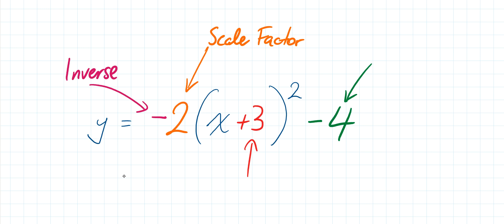Third, in the red we have our horizontal transformation. What's going to happen here is this is going to move the parabola left or right from where it would ordinarily be. Because it is a positive, it is going to move it to the negative, whereas if it was a negative — say a minus 3 — we'd move it into the positive. So it's the opposite of what you'd expect. That is our horizontal transformation — it shifts the parabola left or right depending on whether it's positive or negative.